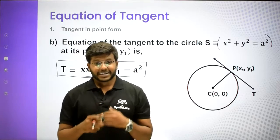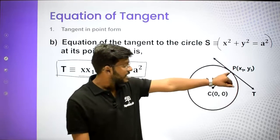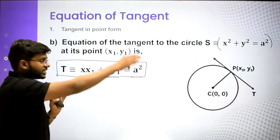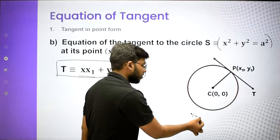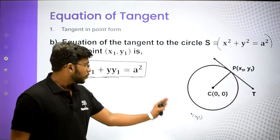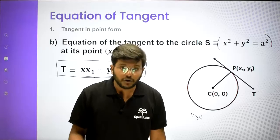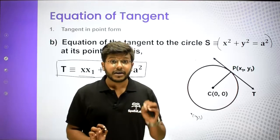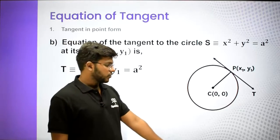I am reminding this again because students always make this mistake. x1, y1 must be lying on the curve. If the point is outside the circle and you are asked to find the equation of tangent from that point, then T equal to 0 will not be the correct answer. We will discuss how to handle that case separately, but for point form, the point must lie on the circle.